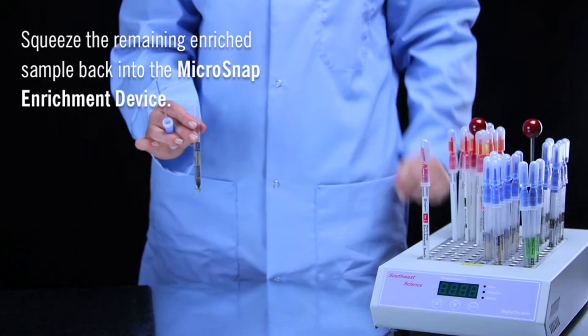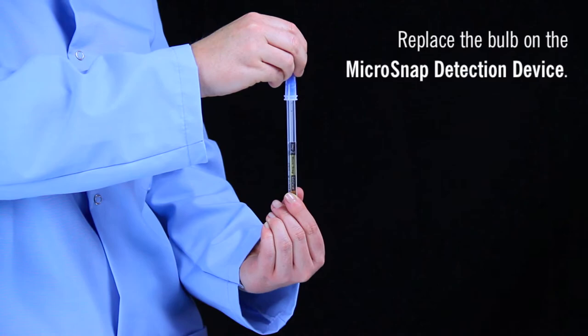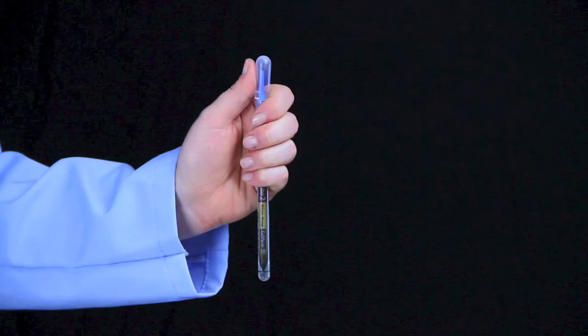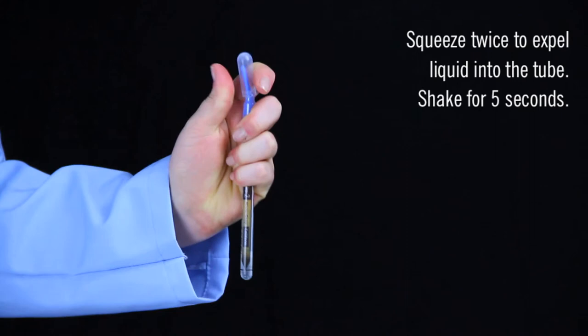Replace the bulb on the detection device. Hold the swab tube firmly and use the thumb and forefinger to break the snap valve by bending the bulb forward and backward. Squeeze the bulb twice to expel liquid into the tube and shake for 5 seconds. Incubate for an additional 10 minutes.